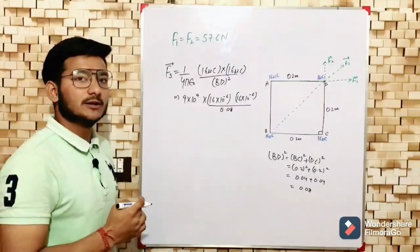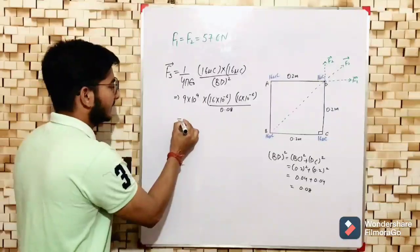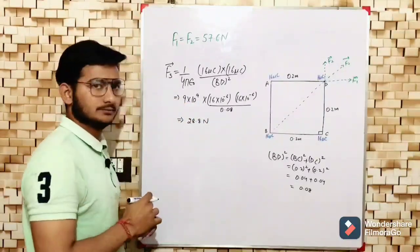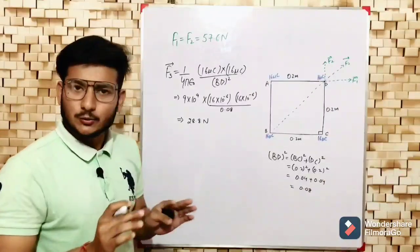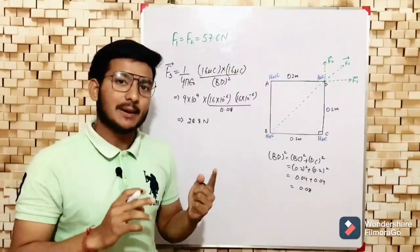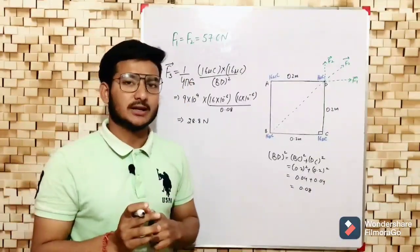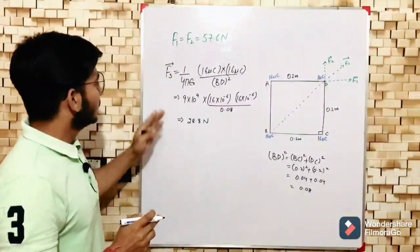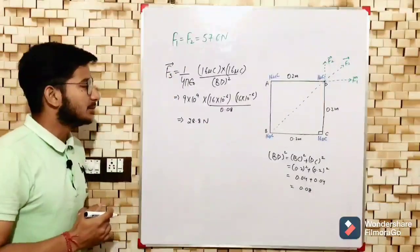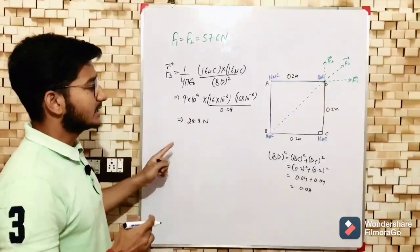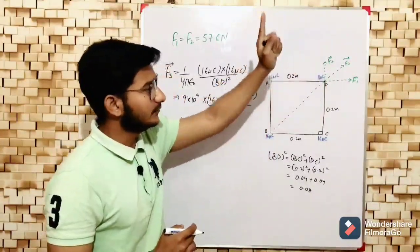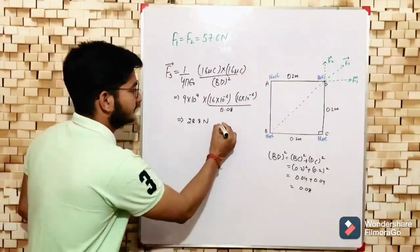Substituting into the formula with 9×10⁹, 16×10⁻⁶ for each charge, and BD² = 0.08, the answer comes out to be 28.8 Newton. No need to worry if you have any problem in calculation — check the handwritten notes. So F3 = 28.8 Newton and its direction is along BD, since the force acts from B towards D.